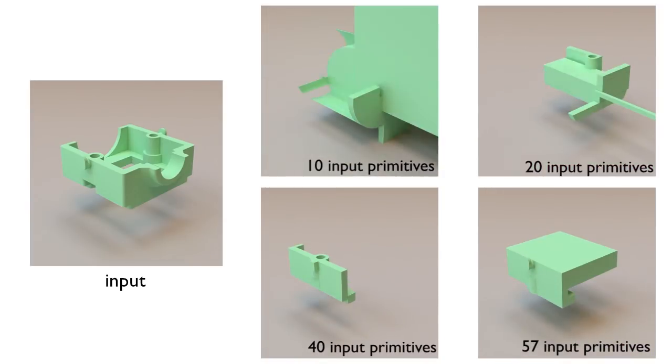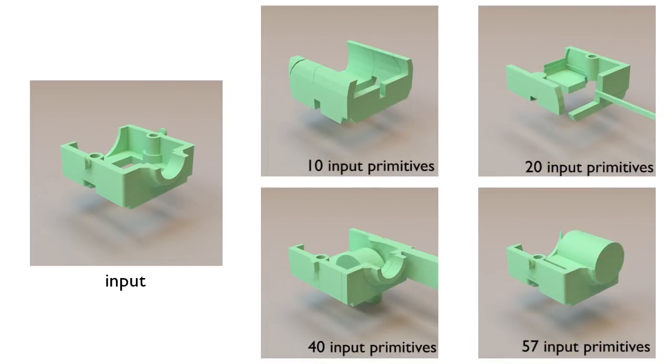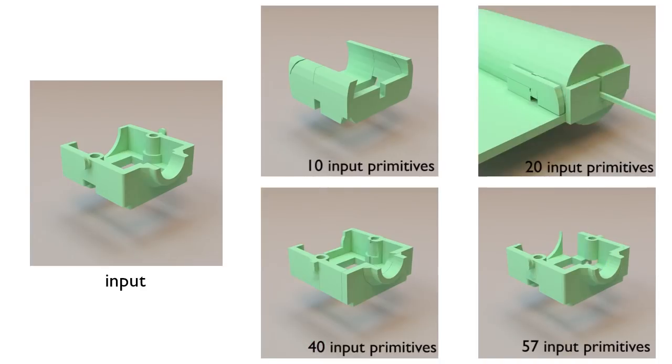Our method can handle missing surface primitives. This example shows how the resulting reconstruction improves with the number of inputs, but the method can still generate good approximations when the number of input primitives is bounded.